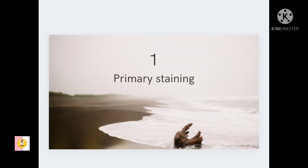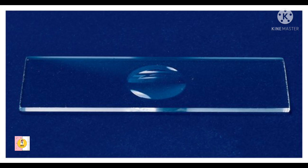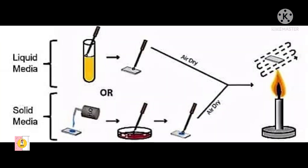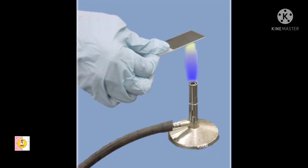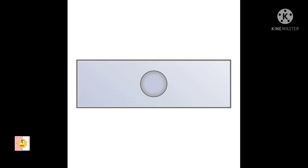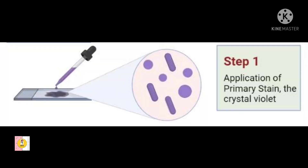First we will take a slide that contains the heat-fixed smear of bacterial cells. Heat fixation is used to immobilize the bacteria, and by immobilizing them it makes the bacterial cells more permeable to the dyes that we are going to apply.